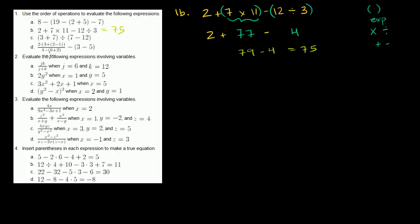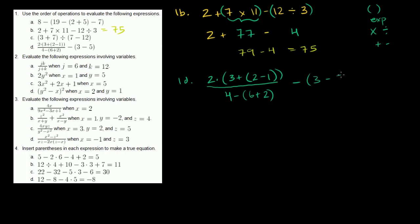Let's do 1d — a hairy problem. It says 2 times (3 plus (2 minus 1)), all of that over (4 minus (6 plus 2) minus (3 minus 5)). Parentheses take priority, so let's simplify: 2 minus 1 is 1, and 3 minus 5 is negative 2, and 6 plus 2 is 8.